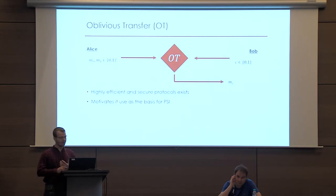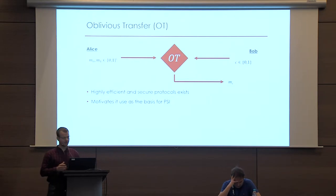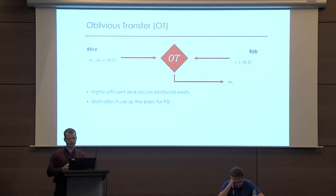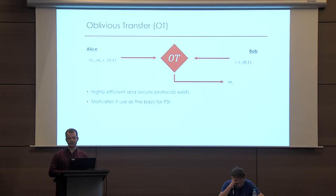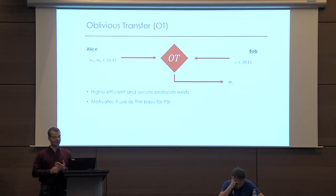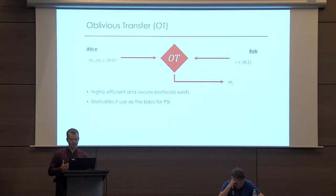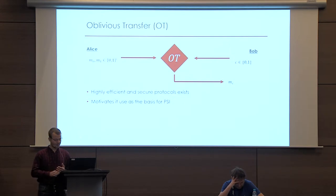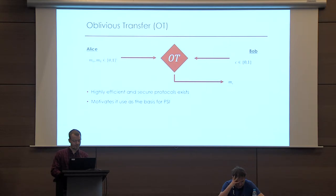One of our fundamental building blocks is Oblivious Transfer. In this functionality, Alice on the left-hand side has two messages, and Bob has a single bit C. Bob wishes to learn M_C and nothing about the other message, and Alice shouldn't learn C, the bit. There are highly efficient and malicious secure protocols for this, and it motivates it as the basis for private set intersection — it's practically fast.